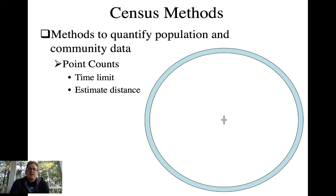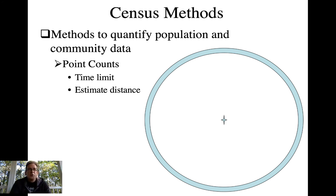There are some issues with point counts — if you start with one circle early in the morning and don't get to the 10th or 15th until 11 o'clock, bird activity will be greatly reduced. You need to rotate so that all sites get good and bad sample times averaged out. You need to pay attention to weather — you don't want to record on days when it's raining, birds aren't singing, and your detectability is much reduced and not comparable to other days.